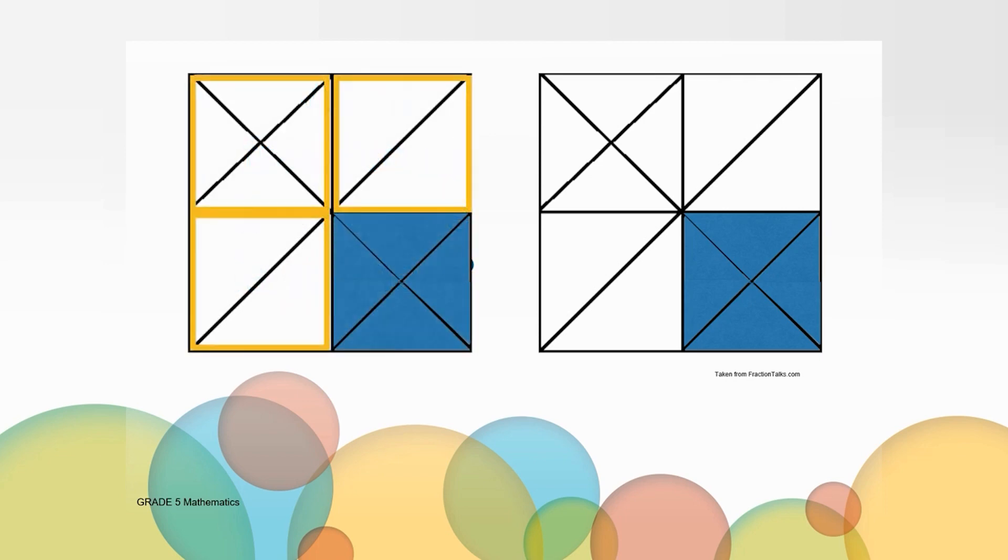So, the first way I thought about it was to look at the square as broken up into four sections, or four squares. Since my whole is the entire square, the blue represents one square out of four squares altogether, or one-fourth. So, one-fourth is shaded. Did this thinking match your thinking?